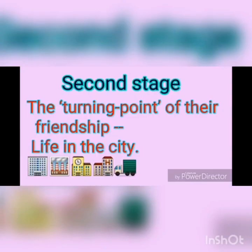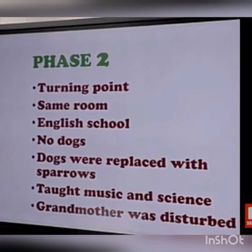The second stage becomes a turning point between the author and his granny. This turning point arises when they moved to city life. Although they were in the same room, there was no more conversation between them. Since the author was busy going to the English school, the grandmother couldn't accompany him as he traveled by motorbike. In the city, she couldn't find dogs to feed the stale chapatis, so dogs were replaced with sparrows, feeding them bread crumbs.